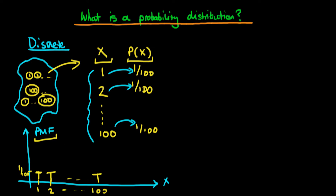Because it's a probability, it has a particular property: the sum — sigma — over all values of x which the random variable can take on, of the probability mass function values, has to sum to one. So the values must be non-negative and the sum of all PMF values over all x must equal one.